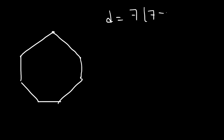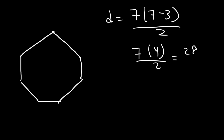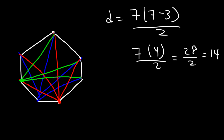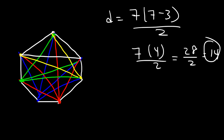Now what about a heptagon? It's going to be 7 times 7 minus 3 divided by 2. 7 minus 3 is 4, and 7 times 4 is 28, and 28 divided by 2 is 14. Drawing them out: 1, 2, 3, 4; then 5, 6, 7, 8; then 9, 10, 11; then 12, 13; and the last one is 14. So there are 14 diagonals in a heptagon.